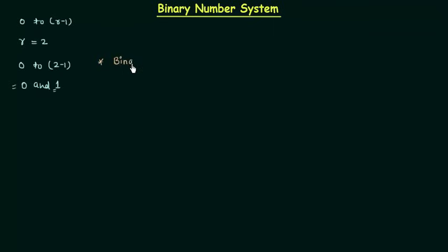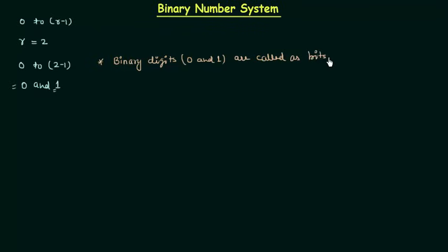Binary digits — 0 and 1 — are called bits. From now onwards I will use the word 'bit' for 0 and 1. Let us take one example of a binary number. The number is 1, 0, 1, 0, 1. This is the binary number.